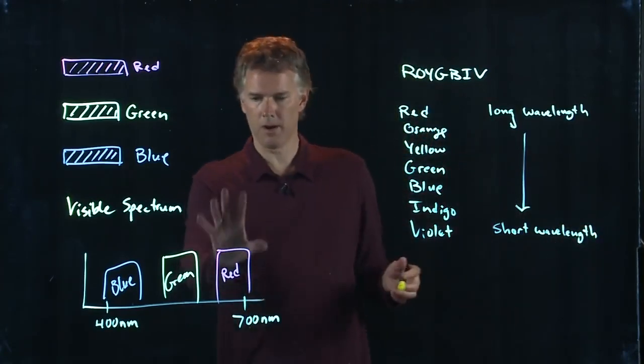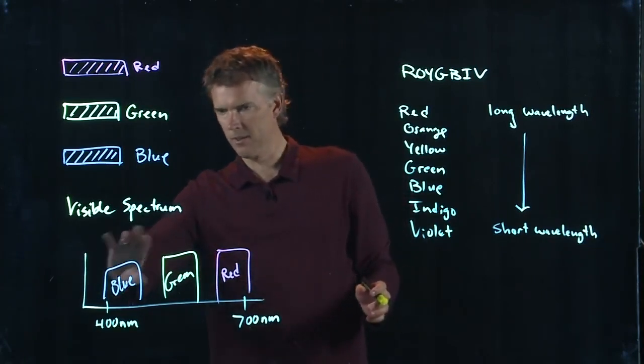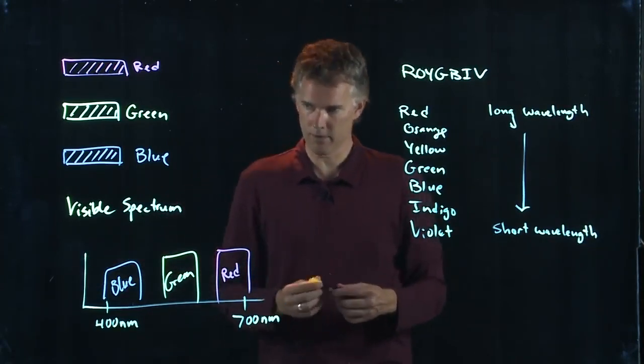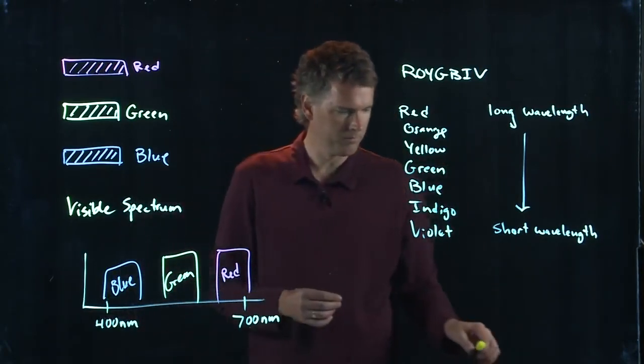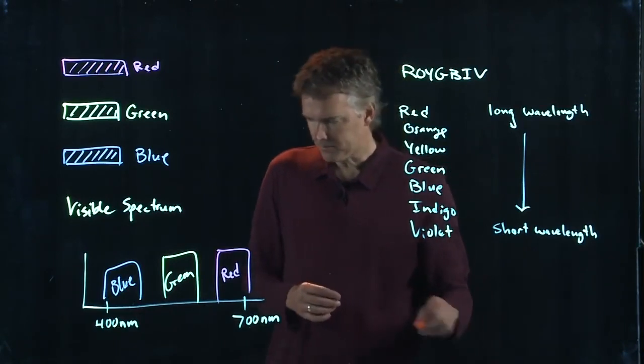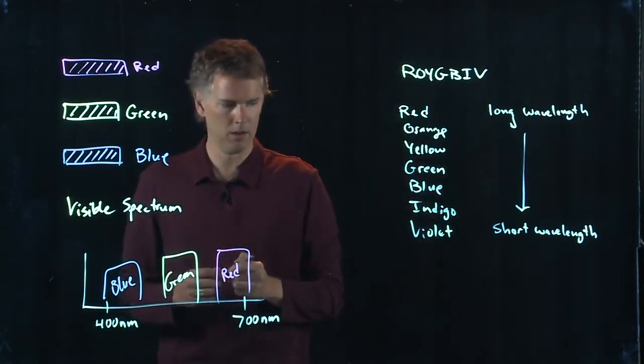Reds are up here in the 600 to 700 nanometer range, blues are down there in the 400 to 500 range, and in between you have all these different colors. When you think about putting colors together, we picked red, green, and blue for a particular reason.